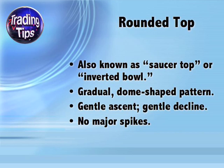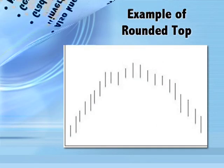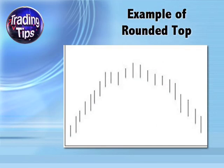A rounded top is also known as a saucer top or an inverted bowl. It is a gradually formed dome-shaped pattern consisting of a rounded, gentle ascent and an equally rounded, gentle decline, with no major spikes to disrupt the pattern. Here is what it looks like.